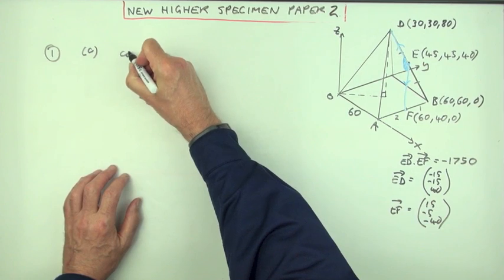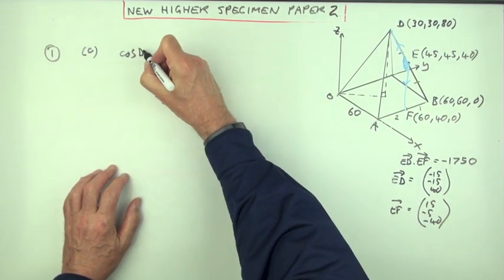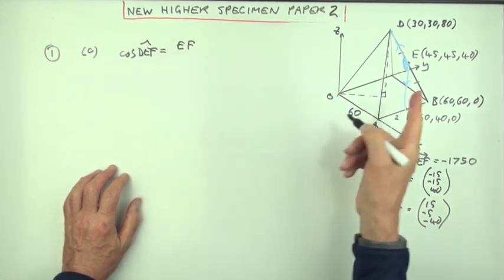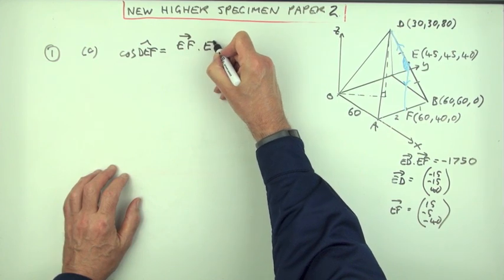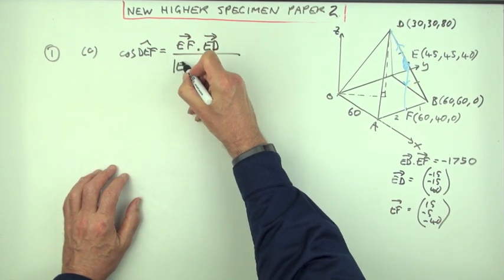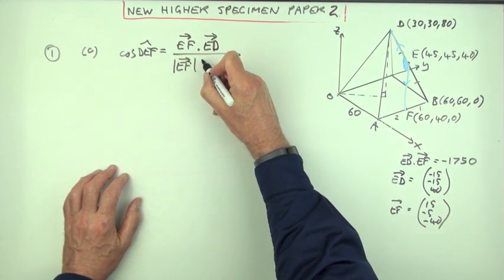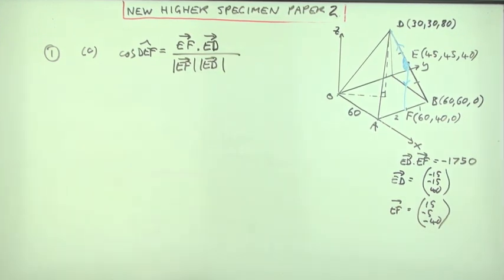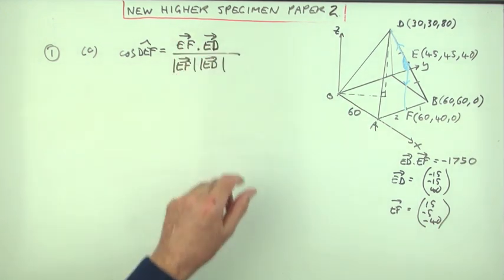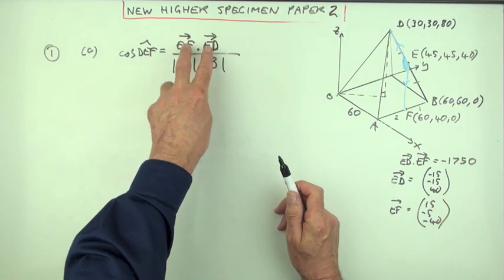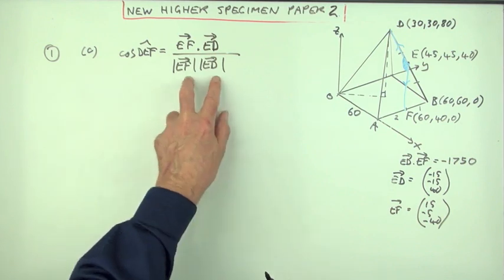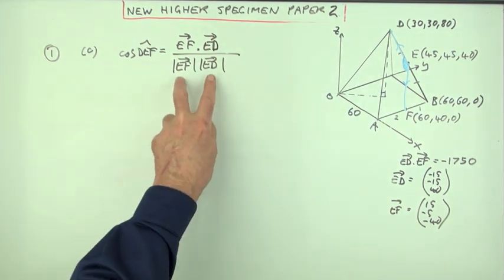And to work that out using the scalar product, you need the vectors that radiate from the vertex of the angle. That would be ED and EF. But that's just what you worked out in the first parts. So that means we could jump straight in with the cosine of, and it's the angle DEF, would be the vectors that radiate away. That's EF dot ED. The scalar product, which we've already worked out, divided by the lengths of them, their magnitudes.